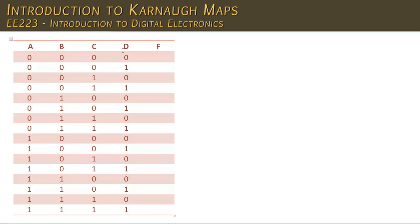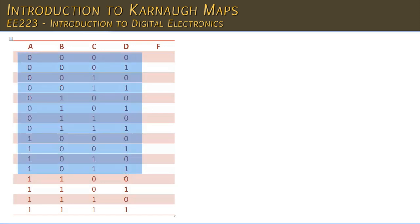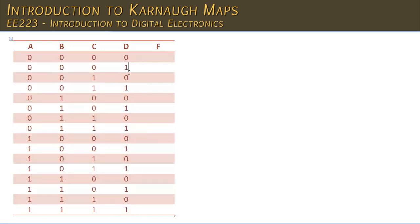Now if we look at the table that has been populated, we have our inputs and no two rows are the same — they all have a different combination. It's a very handy way to set out the states because if you know your number systems, this reads 0, 1, 2, 3, 4, 5, 6, 7, 8, 9, 10, down to 15.